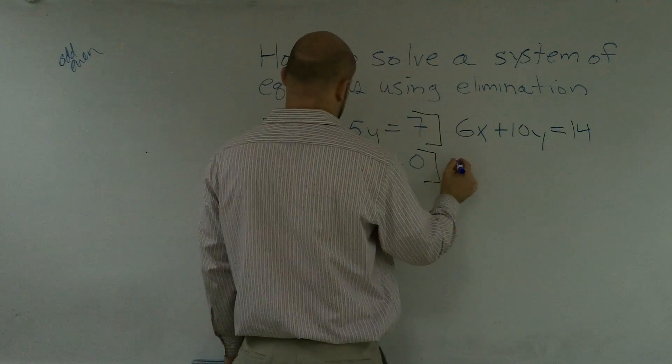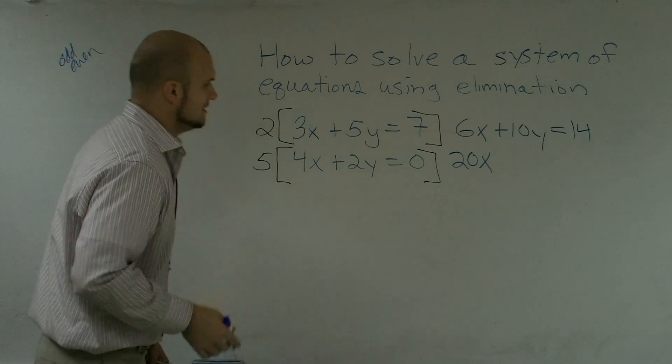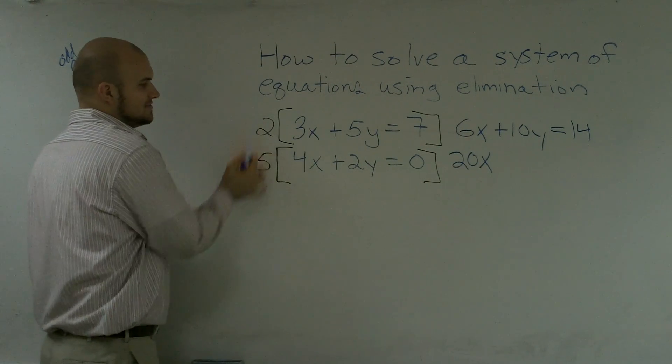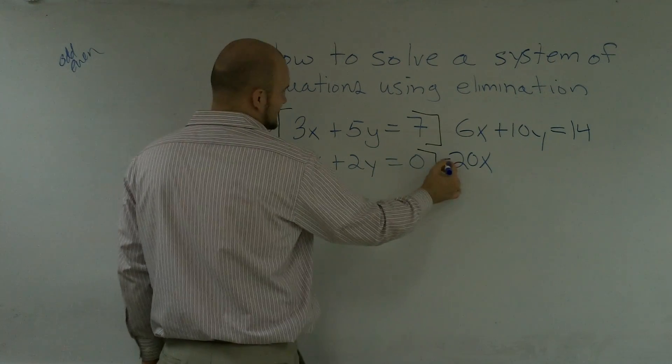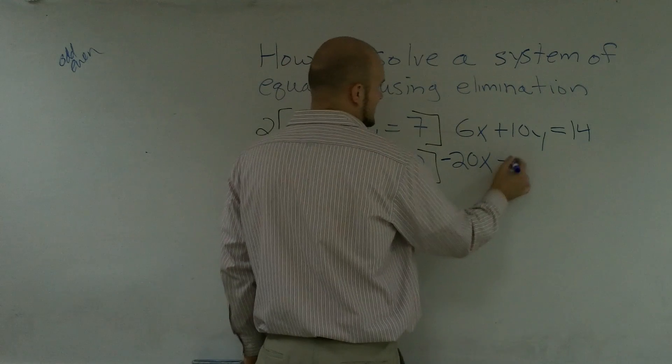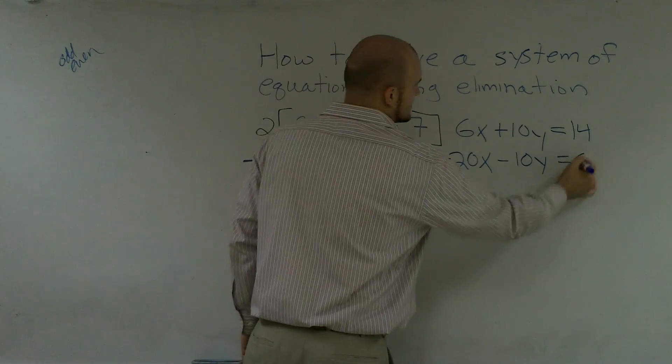5 times 4x is 20x. I need to make sure one of these needs to be negative. I'll make my 5 a negative. So that's negative 20x. Negative 5 times 2y is negative 10y. And then negative 5 times 0 is 0.